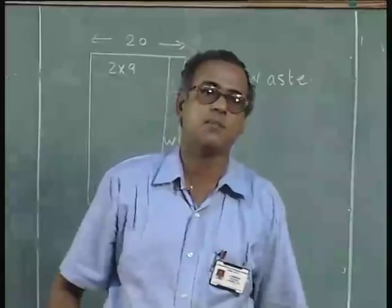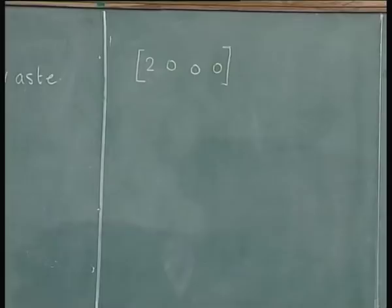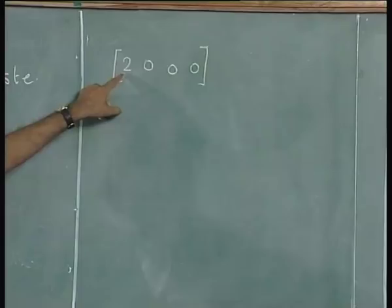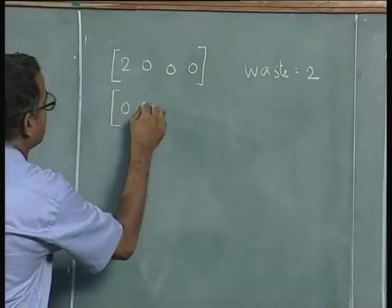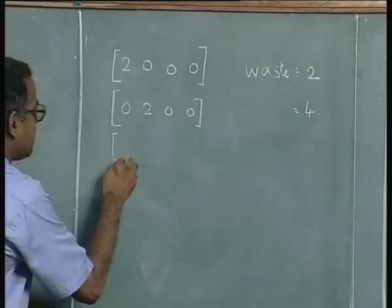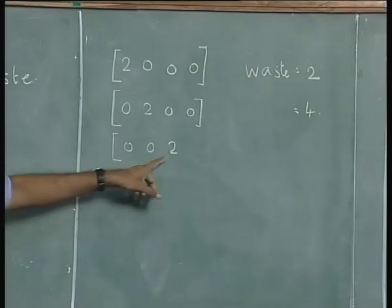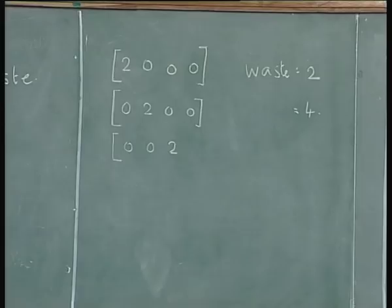We need to find how many cutting patterns are possible. A pattern is defined by how many of each size you cut from a 20-inch sheet. Pattern (2,0,0,0) means cutting 2 sheets of 9-inch with waste equal to 2. Pattern (0,2,0,0) means 2 into 8 = 16, with waste of 4. Pattern (0,0,2,1) means two 7-inch cuts and one 6-inch cut, with waste equal to 0. Pattern (0,0,0,3) gives 6×3=18 with waste equal to 2.